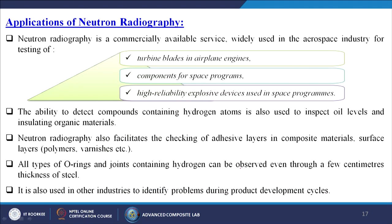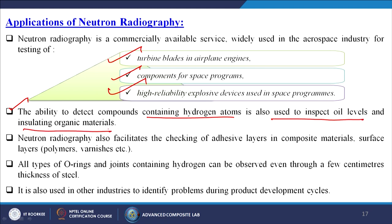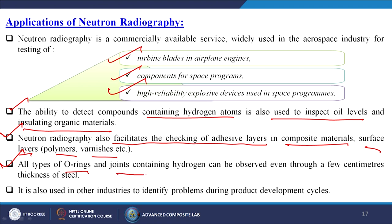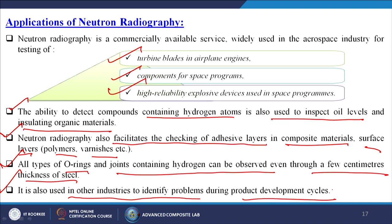Neutron radiography is a commercially available service widely used in the aerospace industry for testing of turbine blades in aircraft engines and high-reliability explosive devices used in space programs. The ability to detect compounds containing hydrogen atoms is also used to inspect oil levels and insulating organic materials. Neutron radiography facilitates checking of adhesive layers in composite materials, surface layers like polymers and varnishes, all types of O-rings and joints containing hydrogen — even through a few centimeters thickness of steel — and is used in other industries to identify problems during product development cycles.